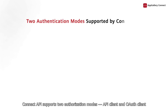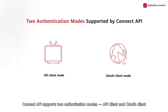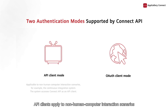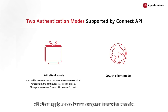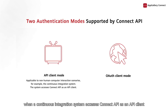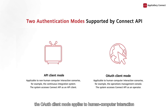Connect API supports two authorization modes: API client and OAuth client. API clients apply to non-human computer interaction scenarios — for example, when a continuous integration system accesses Connect API as an API client. On the other hand, the OAuth client mode applies to human computer interaction — for example, when an operations management console accesses Connect API as an operator.